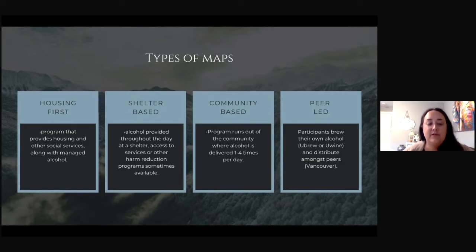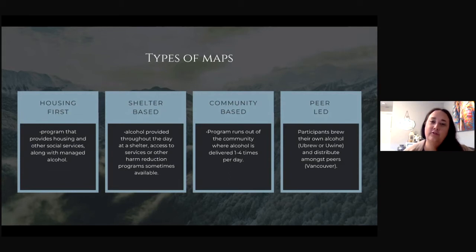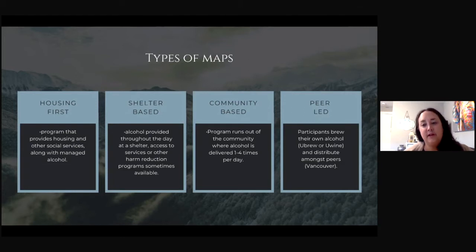As you can see on the screen, there's the Housing First model, which provides housing along with wraparound services and the managed alcohol program. There's shelter-based, where alcohol is provided from a shelter but people have to leave throughout the day and can come back to get their dose. There's community-based, where the alcohol is delivered to people wherever they are living, usually one to four times a day — that's the model being used in northern Manitoba. And then there's peer-led, where participants brew their own alcohol, like a U-brew or U-wine, and distribute it amongst peers; the only one I know of in Canada is in Vancouver.